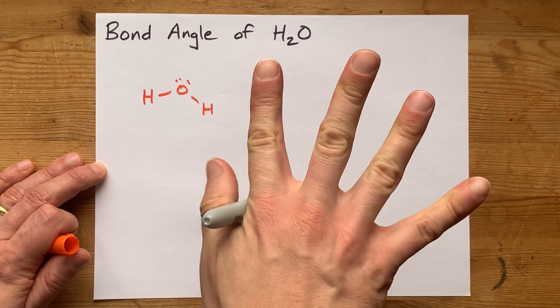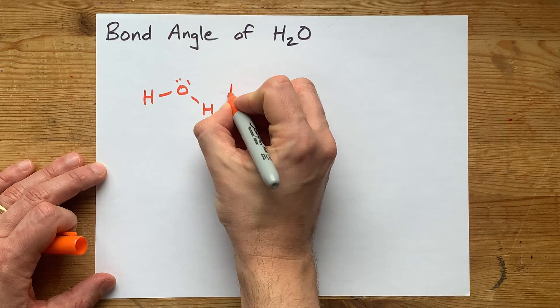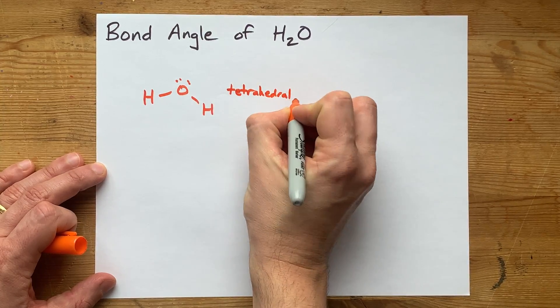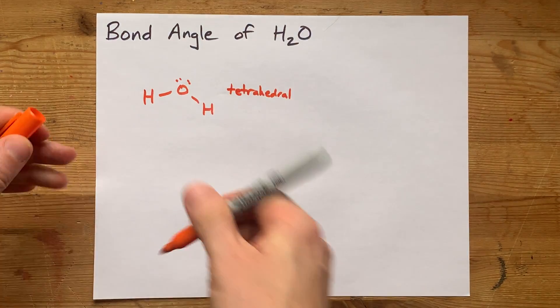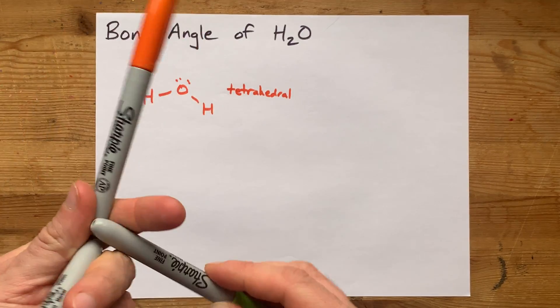That's four different things around the oxygen. So those four things are generally going to arrange themselves tetrahedrally. That's because tetrahedral is the farthest apart that four things can get in three dimensions.